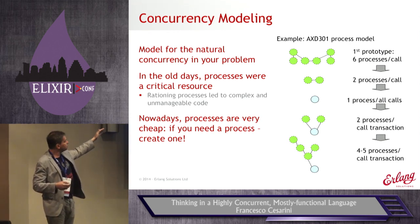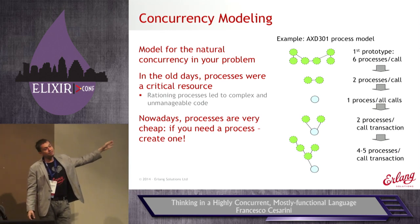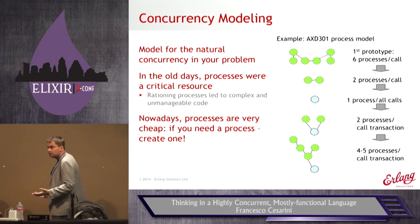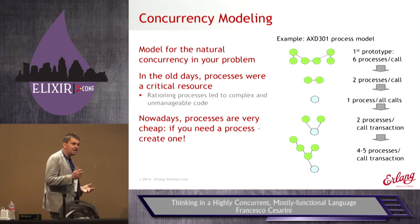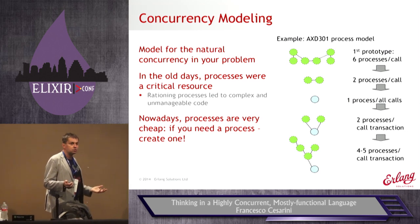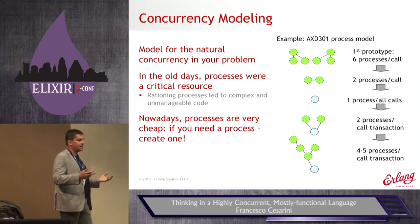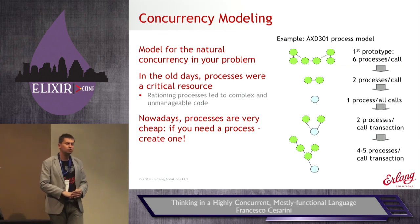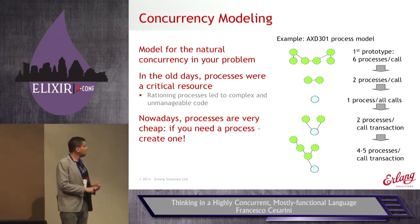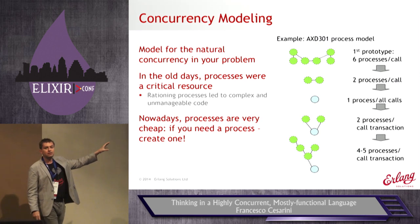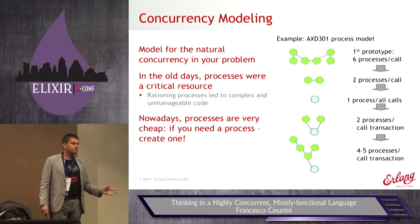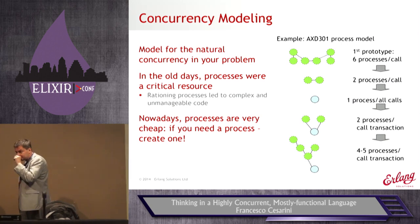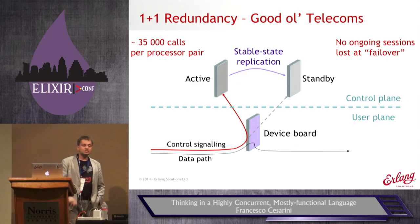From two processes per transaction, processes became cheaper and cheaper, and they eventually moved to four to five processes per call transaction. That meant at any one time, with four or five processes per call transaction, you could be setting up about five to ten thousand calls. But the number of simultaneously open calls became dependent on your memory and the physical constraints of the machine — networking I/O and so on. That's the way to think: set up a process for every truly concurrent activity in your system.